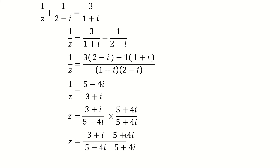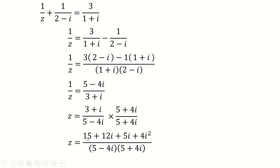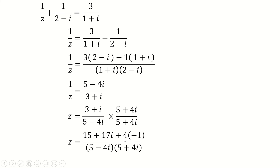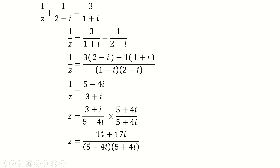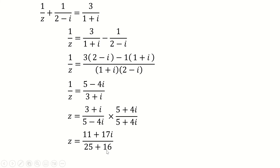Expanding the numerator: (3 plus i)(5 plus 4i) gives 15 plus 12i plus 5i plus 4i squared. Combining: 12i plus 5i is 17i, and 4i squared equals negative 4, so 15 minus 4 is 11. The numerator is 11 plus 17i. For the denominator, since we're multiplying a complex number by its conjugate, it equals 5 squared plus 4 squared, which is 25 plus 16 equals 41. So z equals 11 over 41 plus 17 over 41 i. This is the answer.